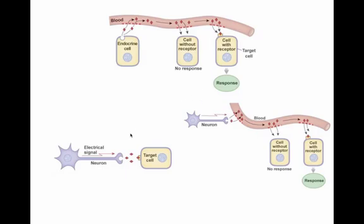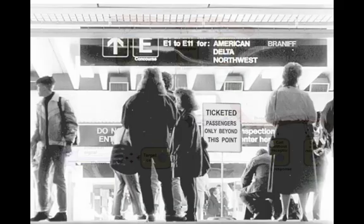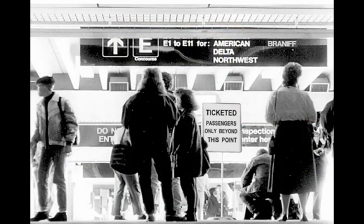Other types of long-distance communication include neurons. These would involve neurotransmitters. And then we have neurons that actually produce molecules that travel throughout the blood — we call these neurohormones. So all of these things involve the concept of signal transduction.